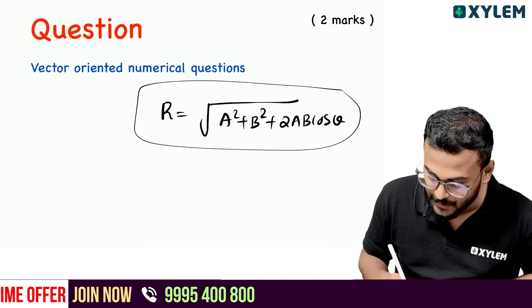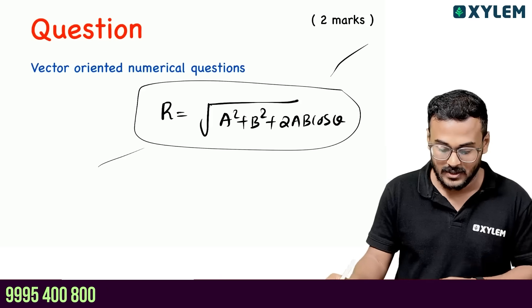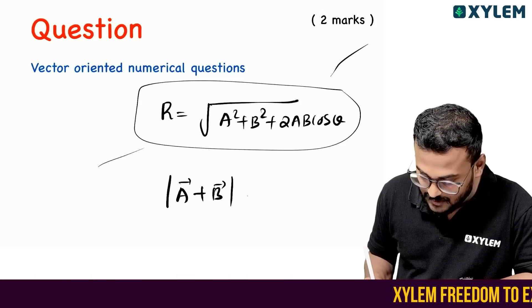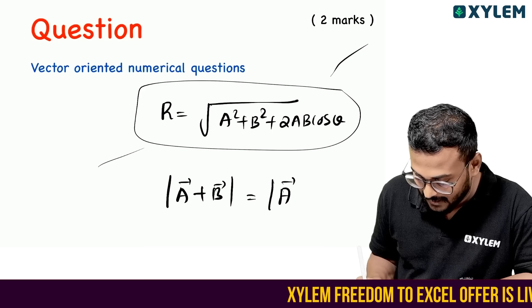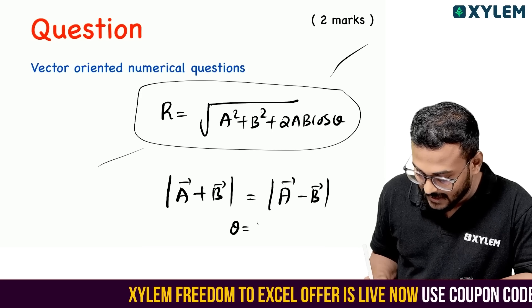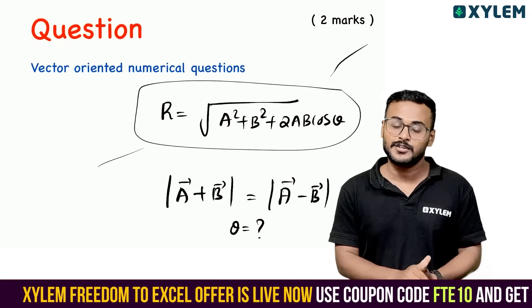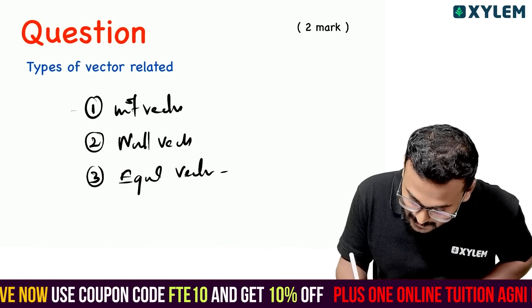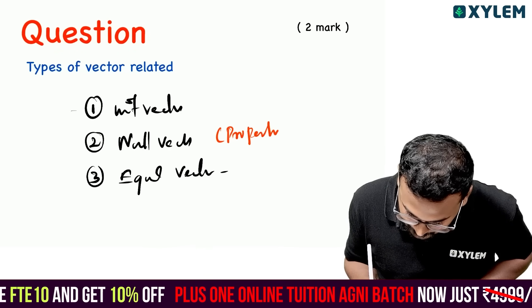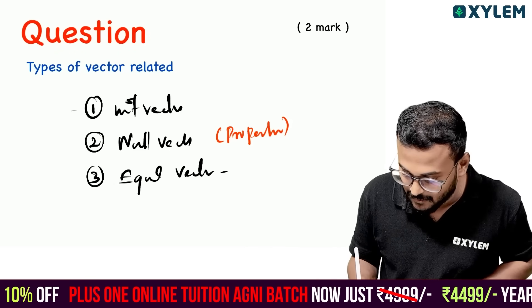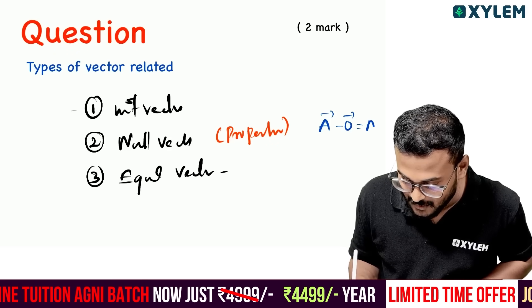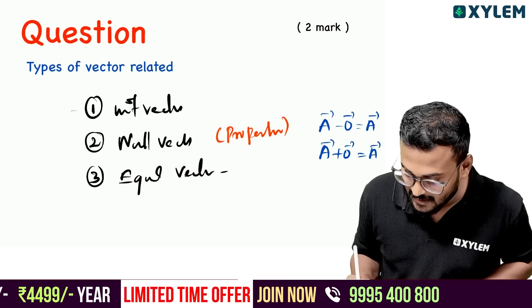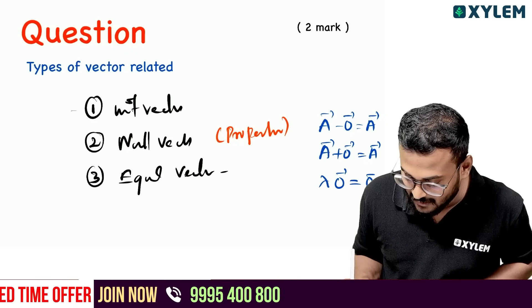Vector-oriented numerical questions: the equation is r equal to root of a-squared plus b-squared plus 2ab cos theta. Similarly, if the magnitude of a plus b equals the magnitude of a minus b, what is the angle between a and b? Very important numerical category.